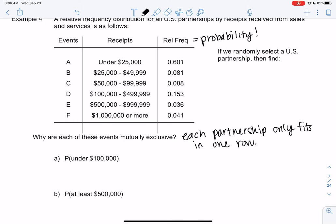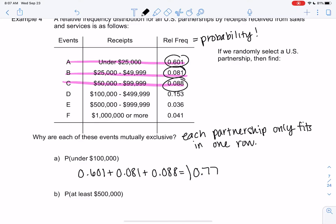Each partnership would only fit in one row, in one of these ranges, not more than one. So that makes probabilities really easy—we just add. Under $100,000 just means we take all the categories under $100,000, which would be the first three rows. We can just add them: 0.601, 0.081, and 0.088. Because there's no overlap, we just add them and get like a 0.77 chance, which is 77%.